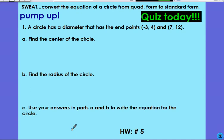A circle has a diameter that has endpoints (-3, 4) and (7, 12). Find the center of the circle and the radius of the circle. Use your answers in part A and B to write the equation for the circle. So, Mr. Bankhead, if you go ahead and pause real quickly, let's see if we have a minute to work. Then hit play, and I'll show some answers.